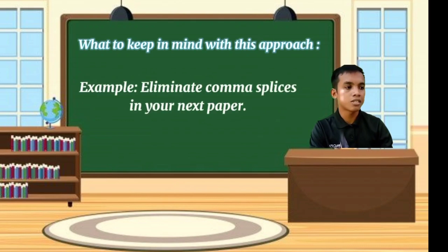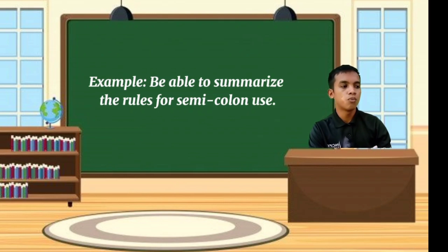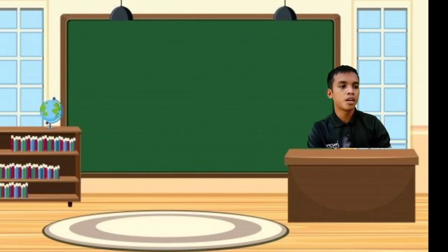Give the students a mini assignment or a goal for the next time. Example: eliminate comma splices in your next paper. Example: be able to summarize the rules for semicolon use. Here are some key things to keep in mind when using conference time to discuss grammar with a student. It's important to have the students set a goal or give the students a task for next time so that what they learn in the conference carries through to their writing.